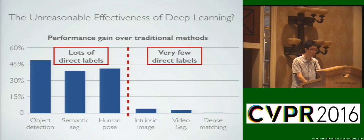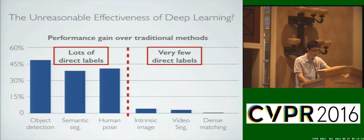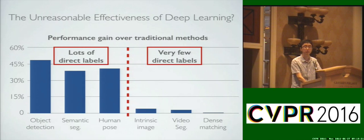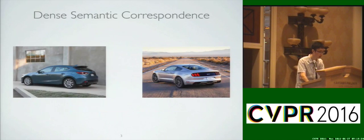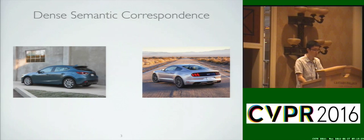In this work, we tackle the general problem of learning without direct supervision, and in particular focus on the task of dense semantic correspondence. In this task, we are given two visually related images, and the goal is to find dense pixel-wise correspondence between them.